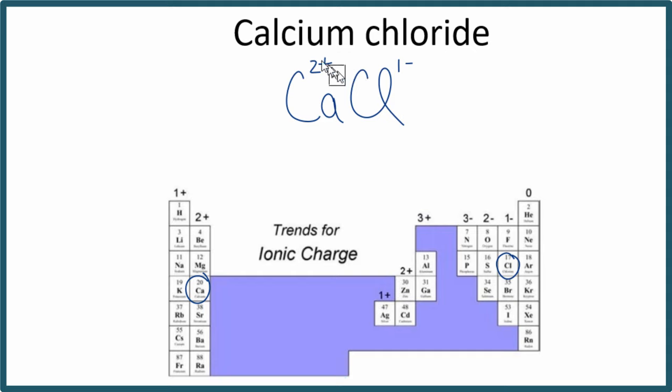So let's use the crisscross method. We can take this 2-plus here and move it down here, and we can take this 1-minus and move it over here. We don't leave the charges in, so let's get rid of those. And we don't usually write 1, that's assumed. And that's the formula for calcium chloride using the crisscross method.